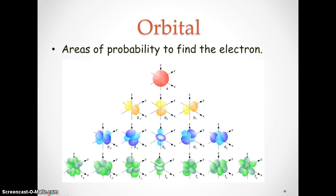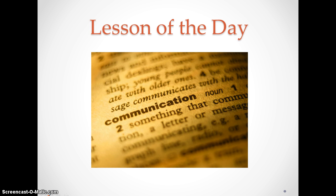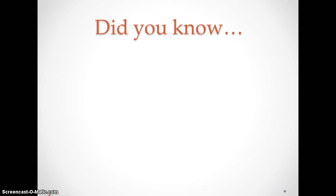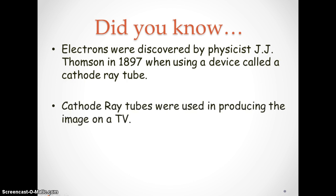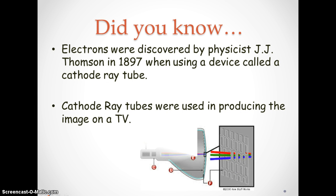Orbitals are the areas of probability of finding an electron. Did you know electrons were discovered by physicist J.J. Thompson in 1897 when using a device called the cathode ray tube? Eventually those cathode ray tubes were used in producing the images on the TV.